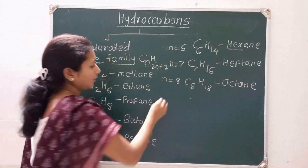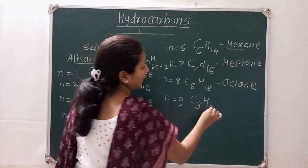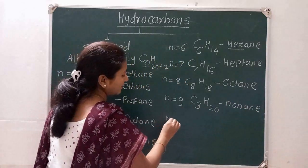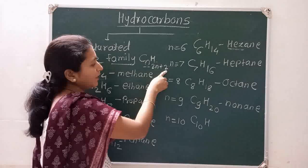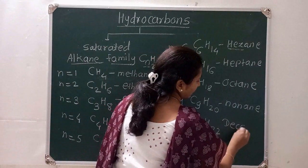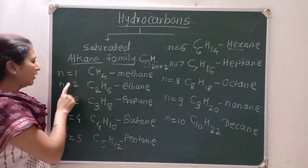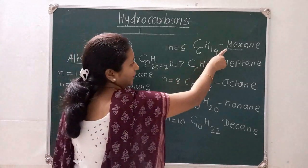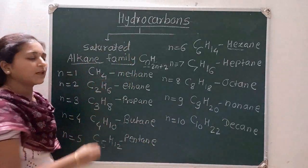When n=9: C₉H₂₀, nonane. When n=10: C₁₀H₂₂, decane. So the alkane family from n=1 to 10 is: methane, ethane, propane, butane, pentane, hexane, heptane, octane, nonane, decane. This is the alkane family.